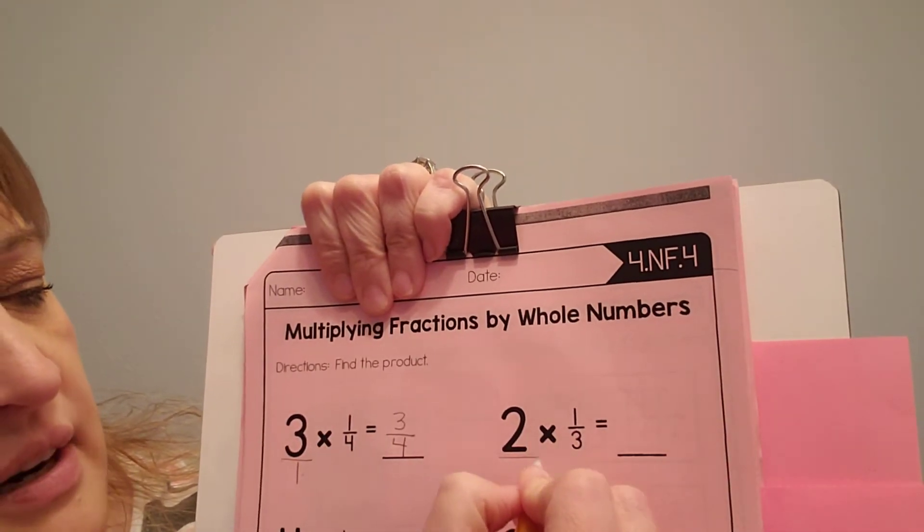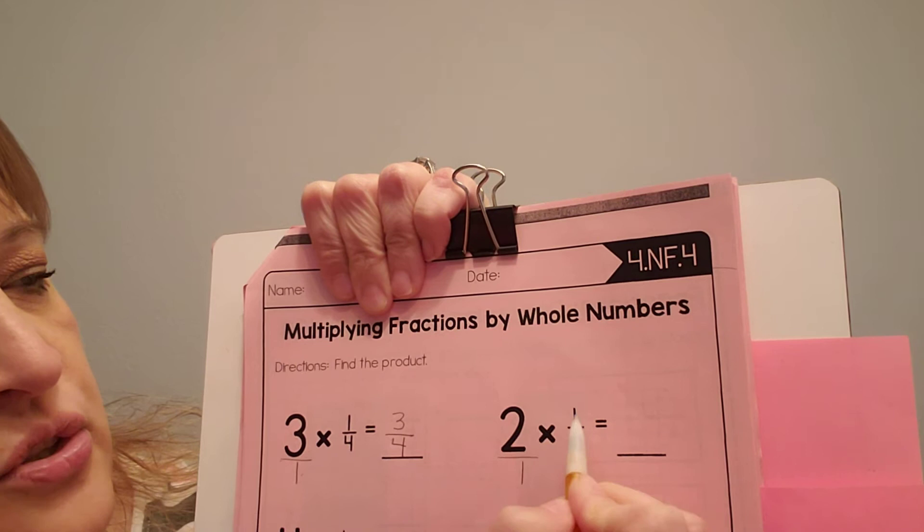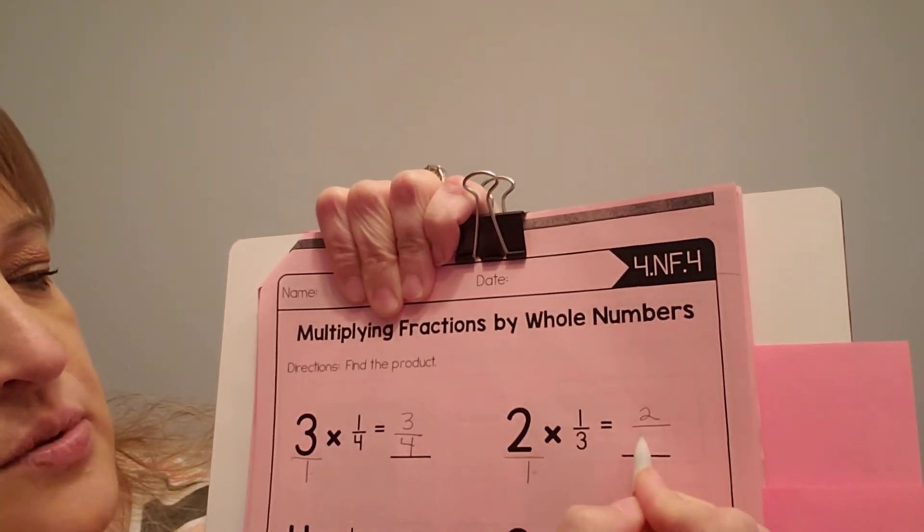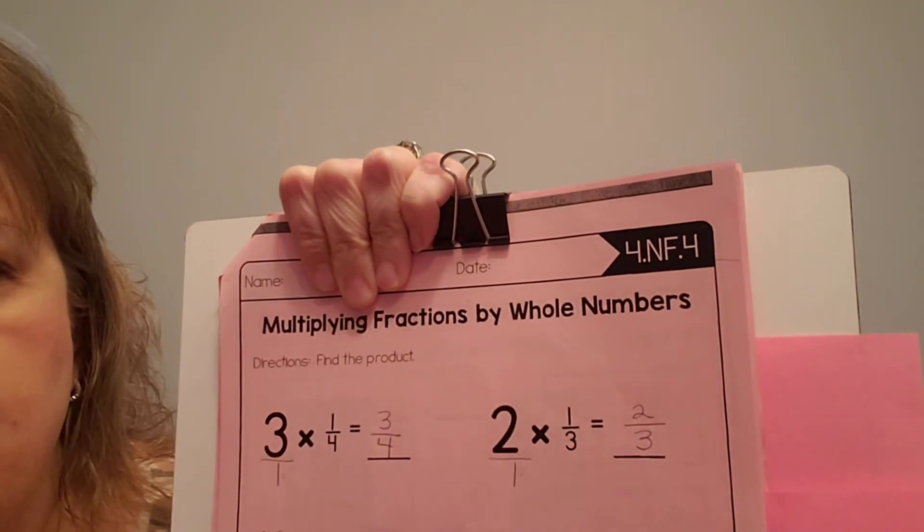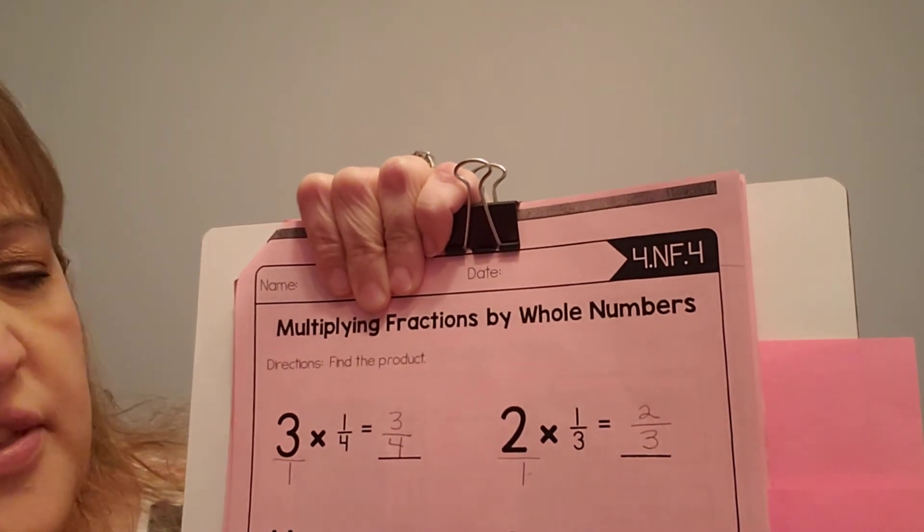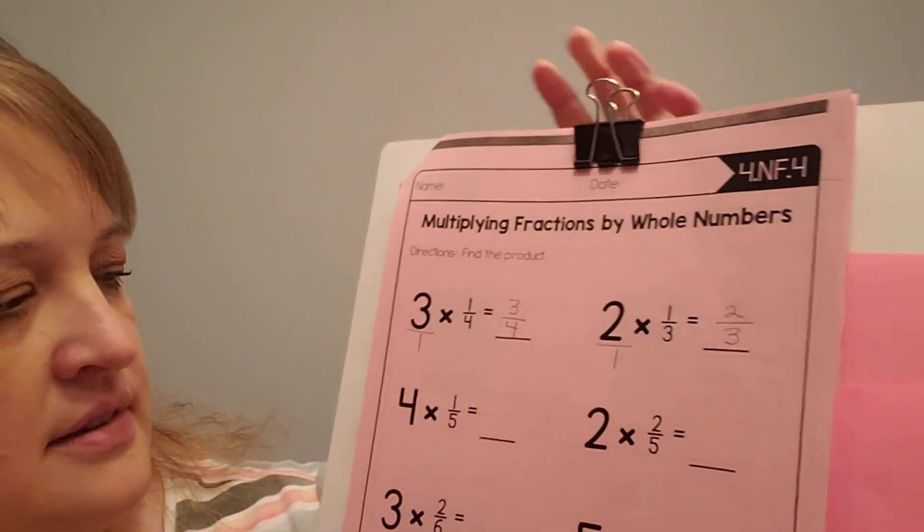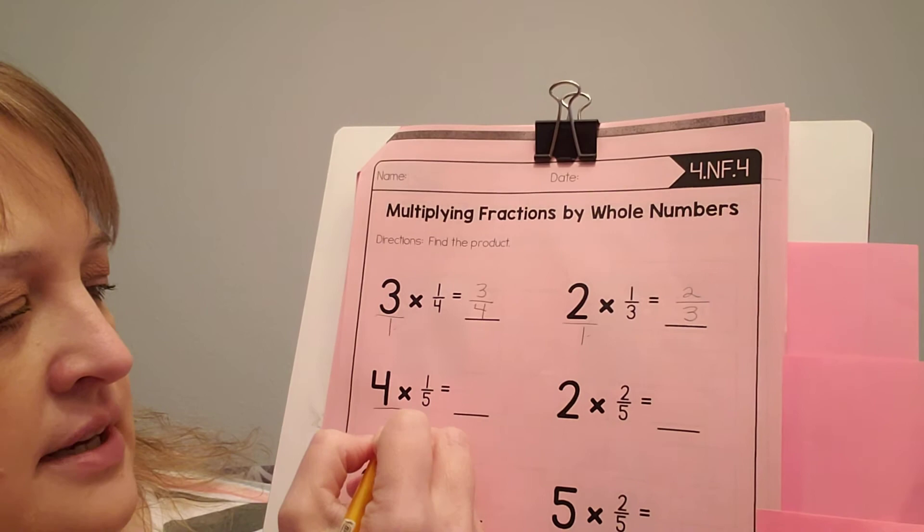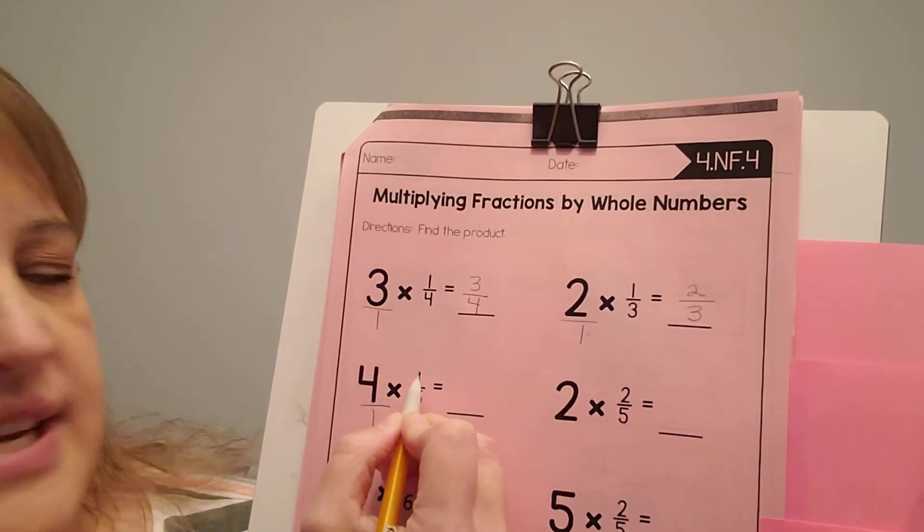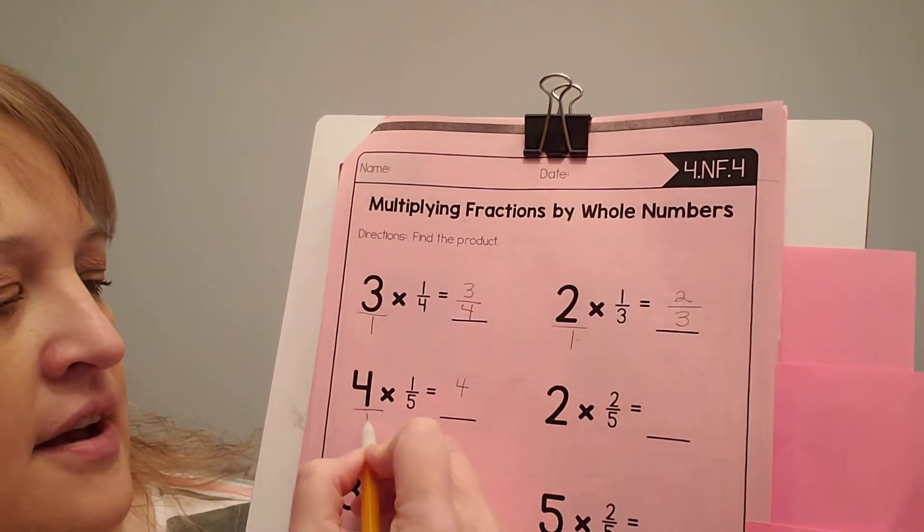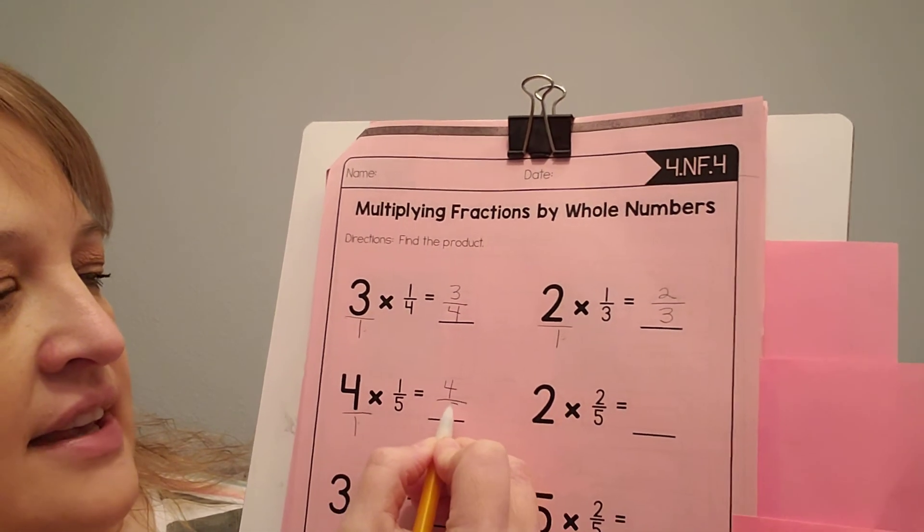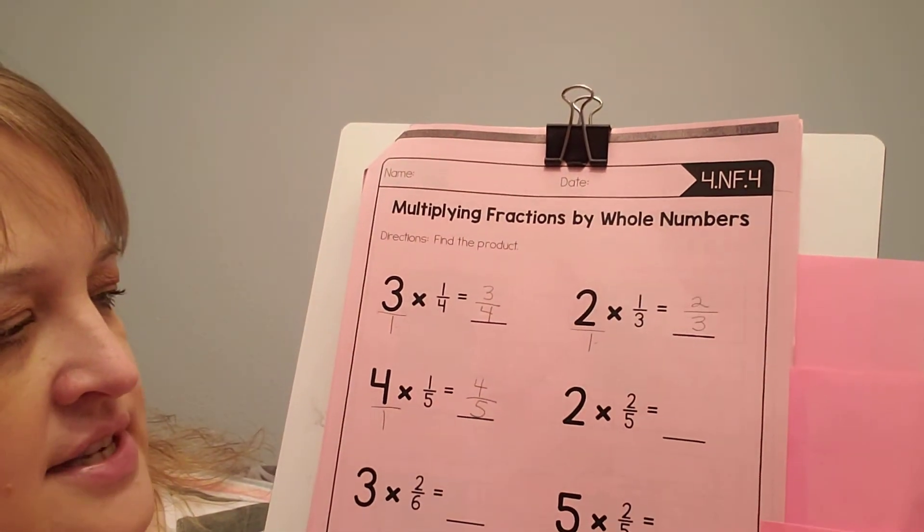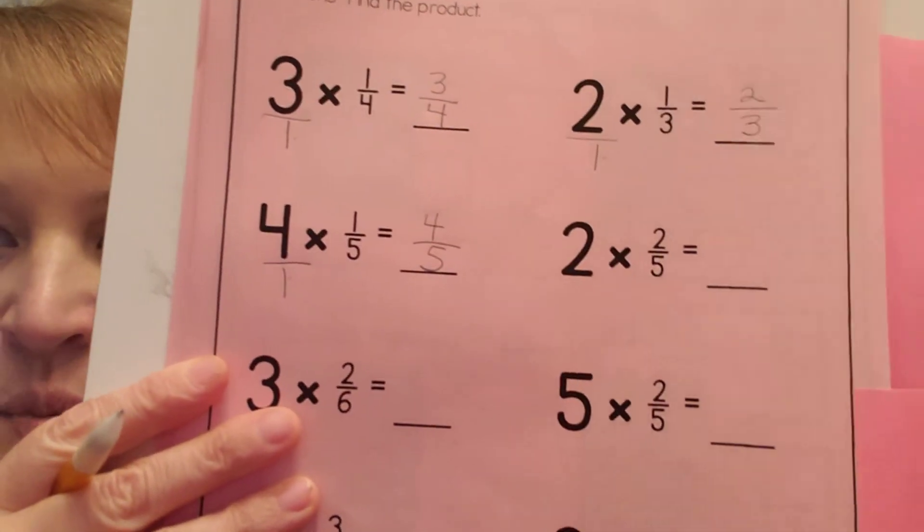Okay. Let's do the same here over 1. 2 times 1 is 2. 1 times 3 is 2 3rds. That's just like adding 1 3rd plus 1 3rd. All right. Let's do this one. 4 times 1 is 4. 1 times 5 is 5. And there you have it.